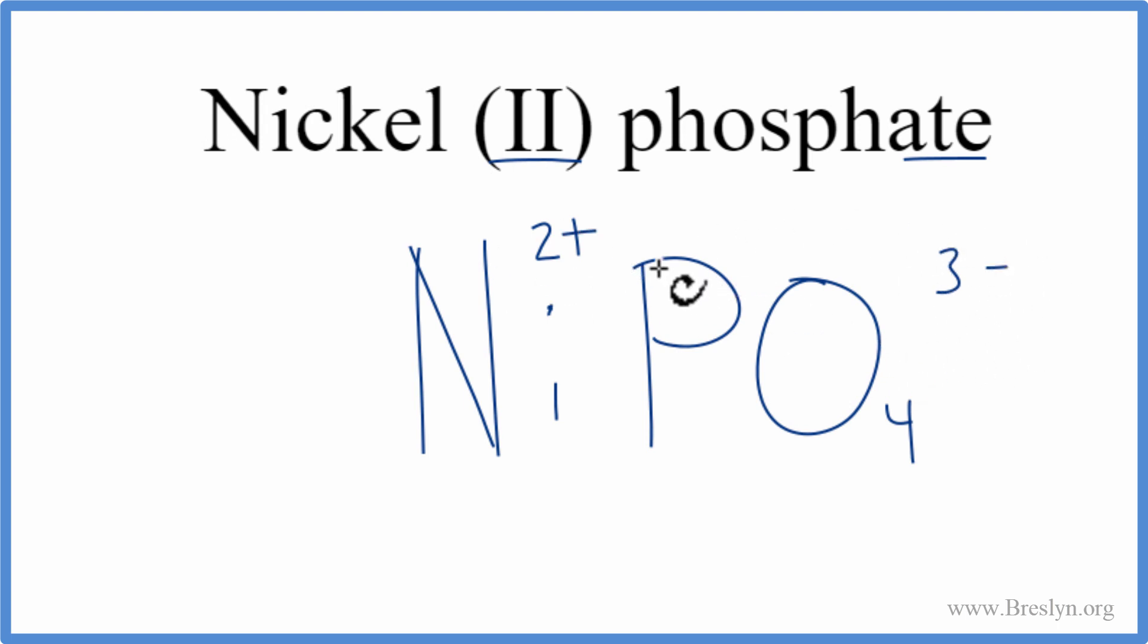And these charges, they need to add up to zero. We need to have a net charge of zero. Right now, they don't. We can use something called the crisscross method to change the subscripts to make that happen.